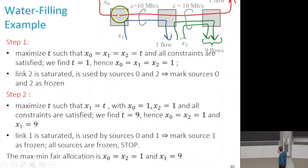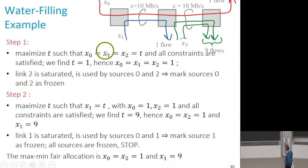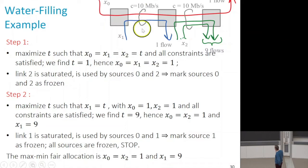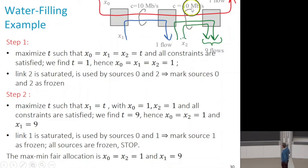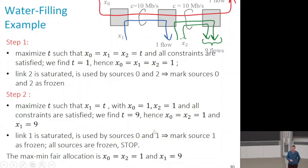Let's apply this to the example. Step 1: egalitarian allocation. We maximize the common value t and find t = 1. When we have t = 1, the second constraint is satisfied with equality — the sources that appear in it are the red and the green. So at step 1, the red and green are frozen to value 1. The only free variable is the blue. We then increase the blue maximally, which gives 9 — exactly the allocation we had found before.